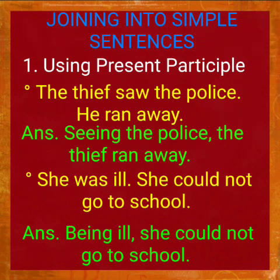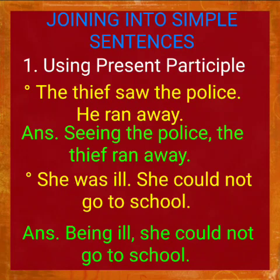Example: 'The thief saw the police. He ran away.' The answer will be: 'Seeing the police, the thief ran away.' Here, the present participial form of 'see' is 'see plus -ing' — seeing the police. The main verb is 'ran away.'